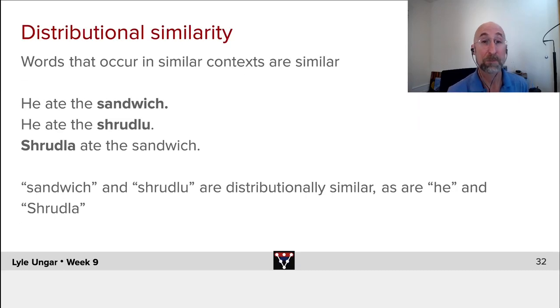The key concept behind embeddings is distributional similarity. The idea is that words that occur in similar contexts are similar. If you look at 'he ate the sandwich' and 'he ate the shridlu'—assuming you haven't seen a shridlu recently—what do we think a shridlu is? Probably a food, right? Something you can eat.